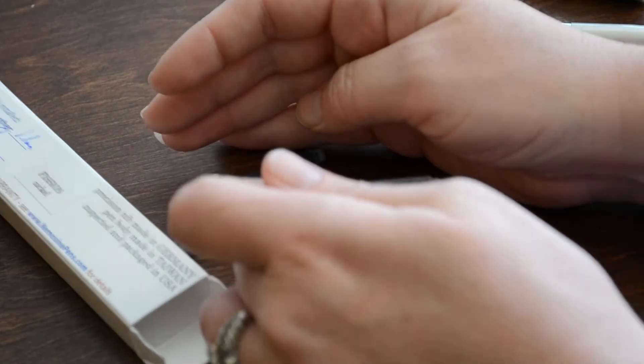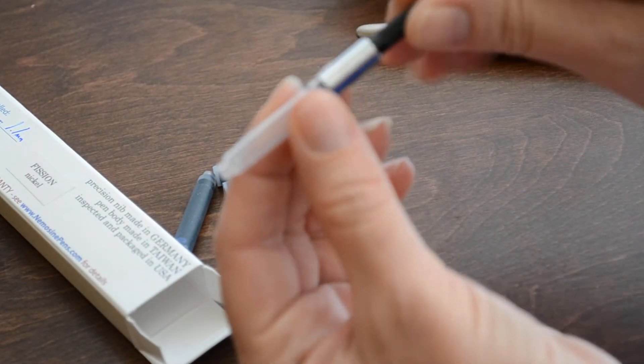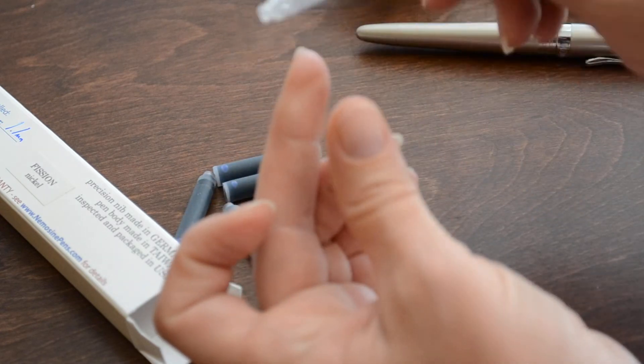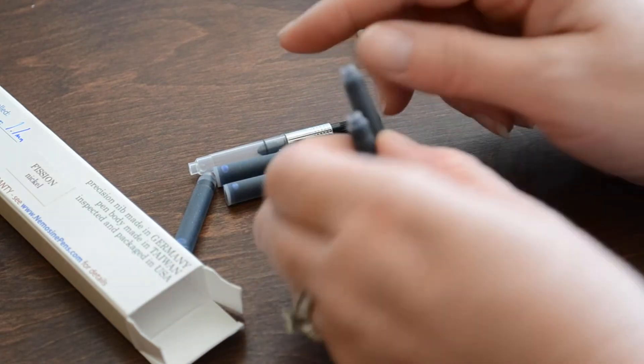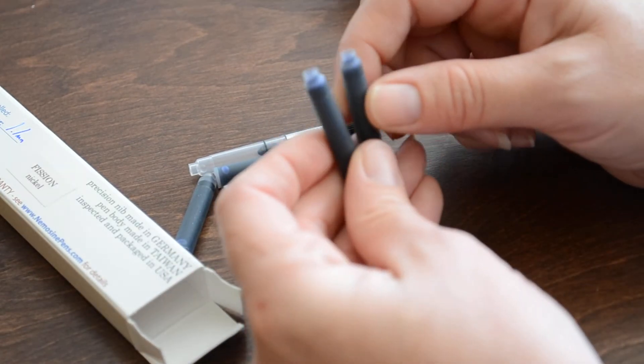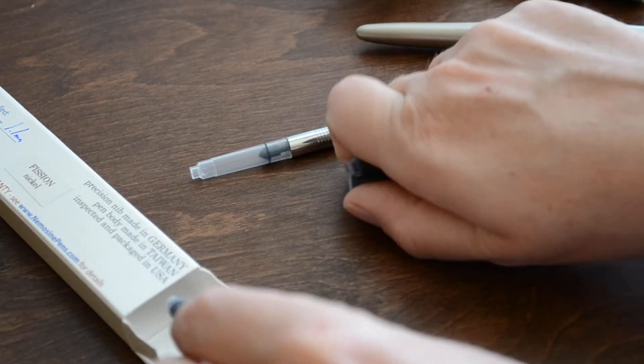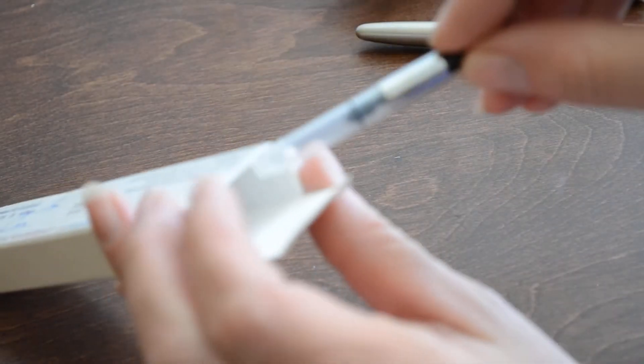So it comes with just your standard twist converter here, a little ball inside to mix up the ink. And also you've got quite a few cartridges. These appear to be just standard international short cartridges. I know that I used a Kaweco because I had some Kaweco turquoise blue cartridges laying around, so I used that in one of the other Mnemosyne fountain pens that I have.